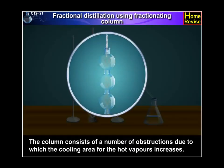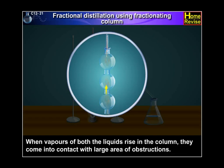The column consists of a number of obstructions, due to which the cooling area for the hot vapors increases. When vapors of both the liquids rise in the column, they come into contact with large area of obstructions.